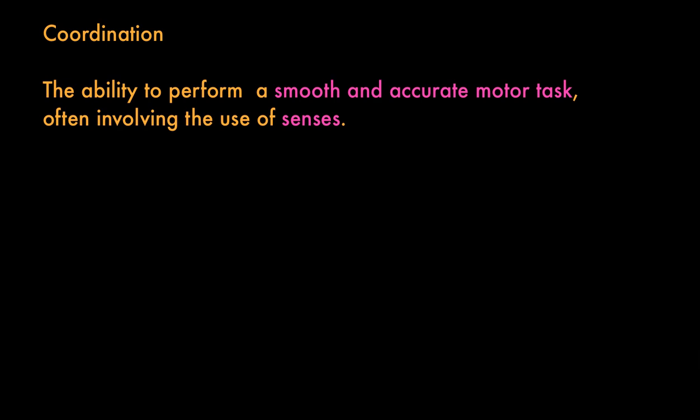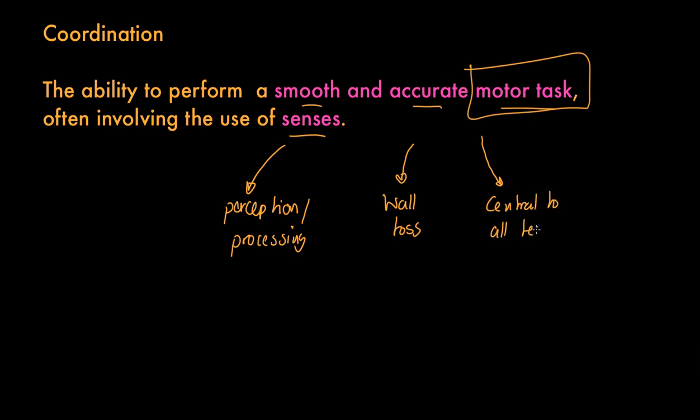Coordination, again, an absolutely central concept to the effective performance of not only fitness but skill. The ability to perform a smooth and accurate motor task, often involving the senses. I want to take the senses point first. Coordination very often involves a sense of perception or what we might call processing. On other parts of PE studies, you might look at basic information processing. Well, of course, coordination or the production of a motor task, simply a movement, involves the processing of information to produce the right movement. How would we test it? We've got this wall toss test that you can have a go. And coordination is central to all technique. We can't really hold effective technique unless we have a good level of coordination.